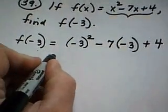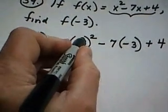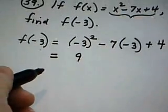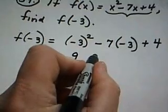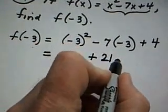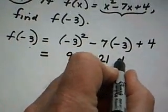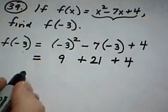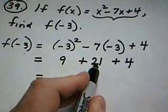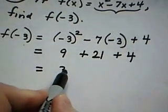Now we do the arithmetic. Negative 3 quantity squared is a positive 9. Negative 7 times negative 3 is a positive 21, and then we pick up a plus 4. So we have 9 plus 21 plus 4. We get 30 plus 4, which is 34.